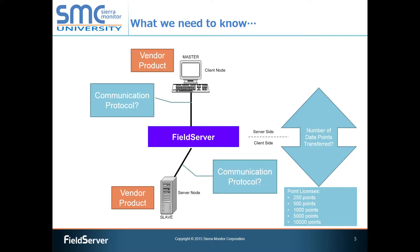The purpose of a communication gateway, simply stated, is to provide a means of taking data off of one communication network and presenting that data to another network. These networks typically use different communication protocols for interaction, so the gateway uses communication drivers to deal with that when moving data from one network to another.